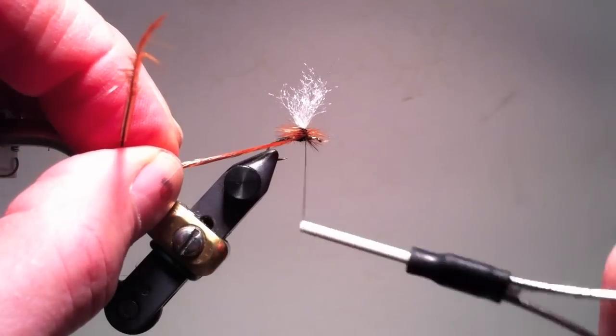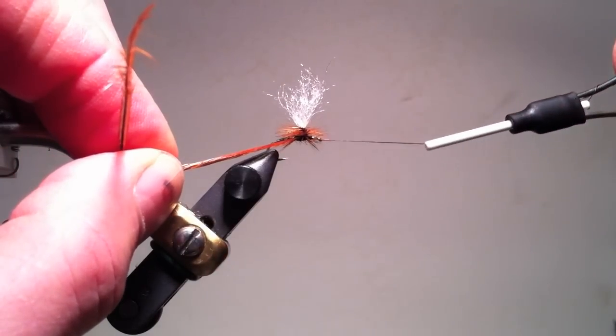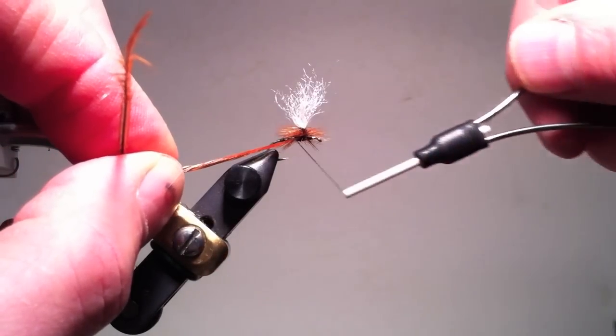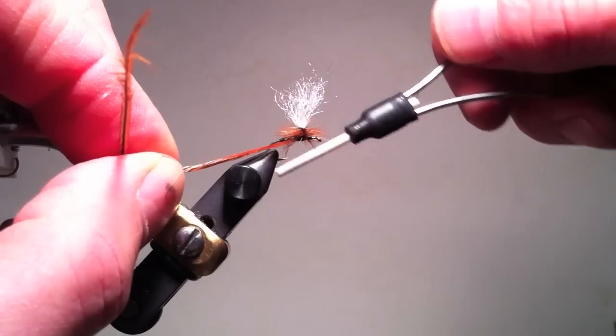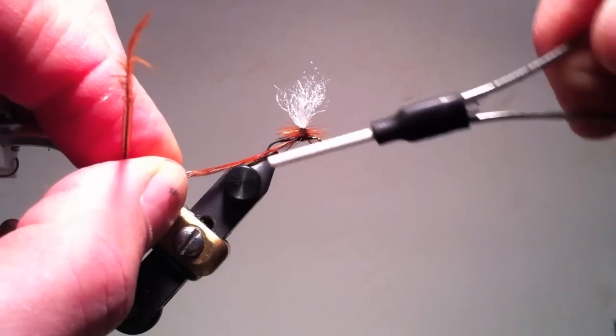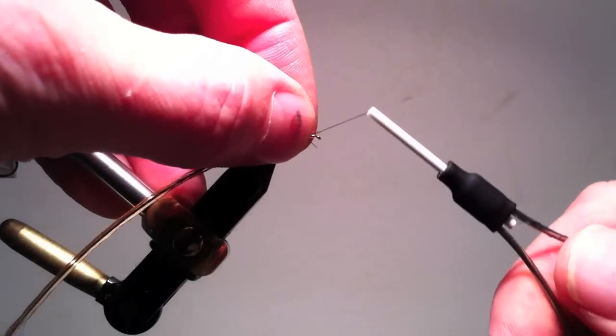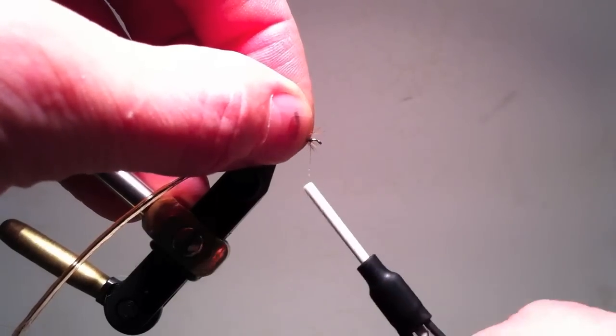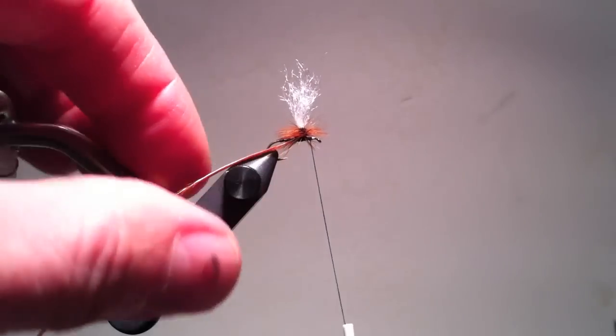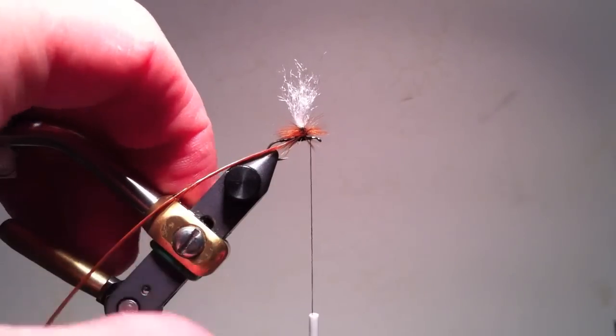I then use the thread to tie the hackle off on the post, being careful not to catch excess fibers. Once that is tied off, I can bring my thread forward to tie it off at the eye in the usual fashion.